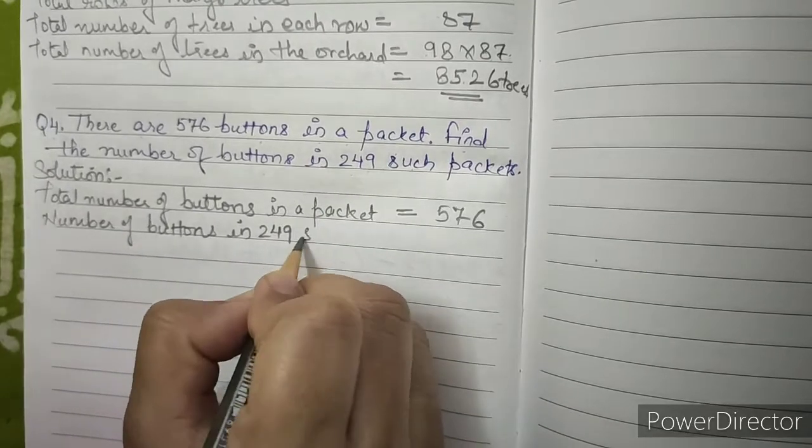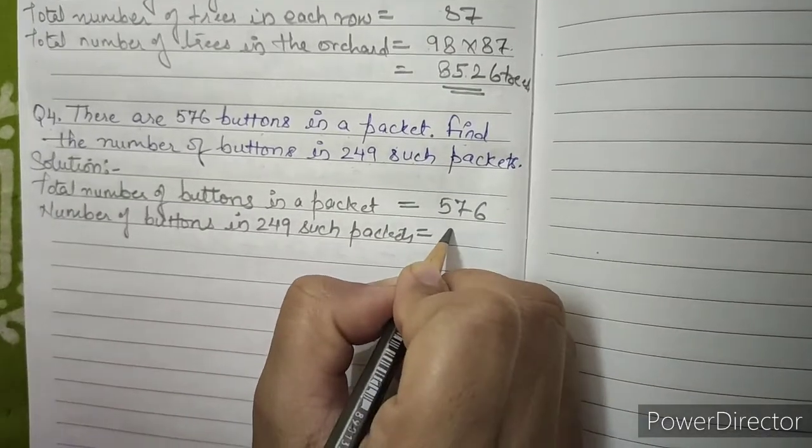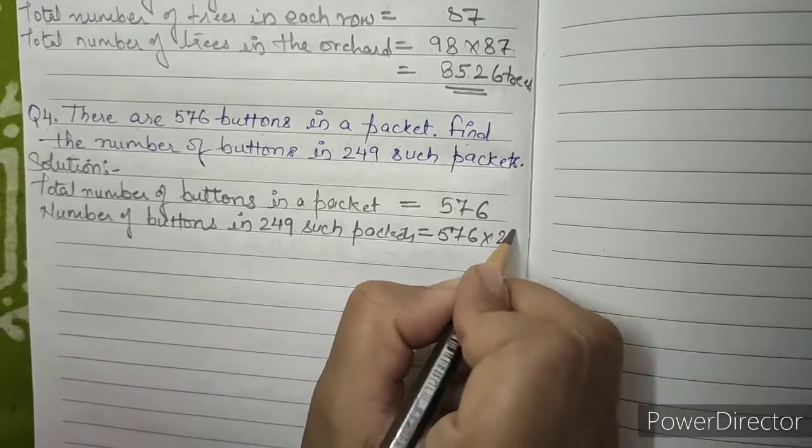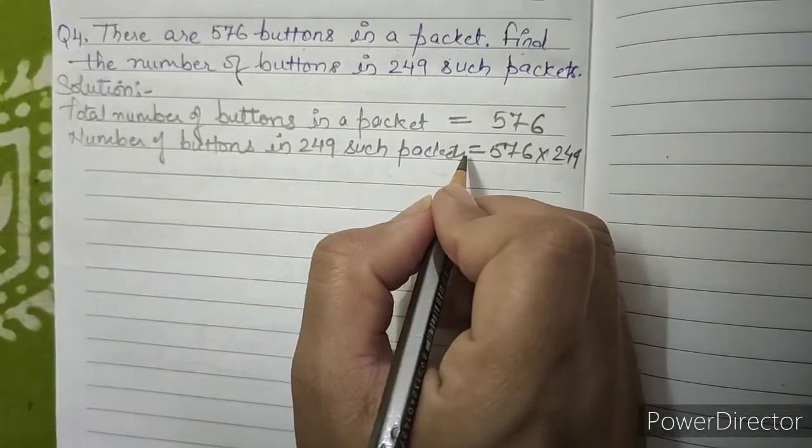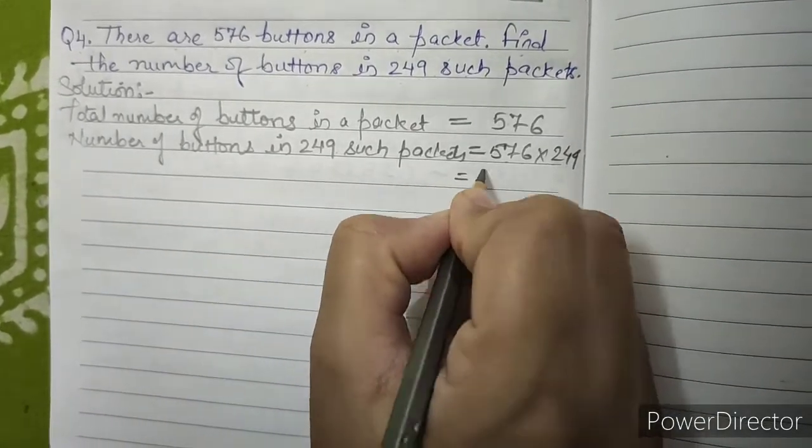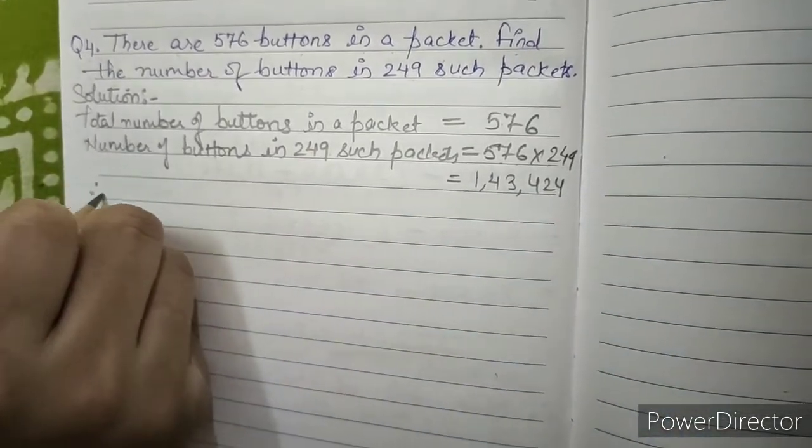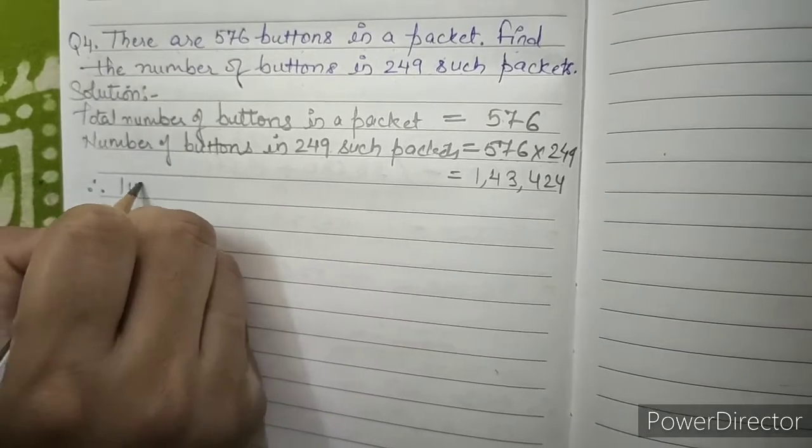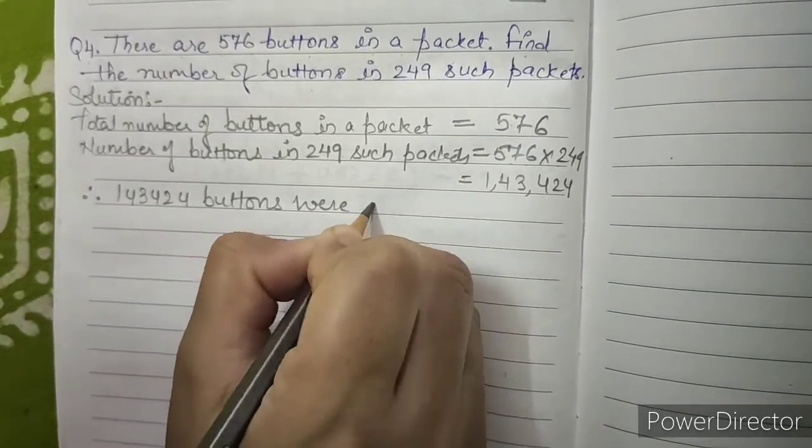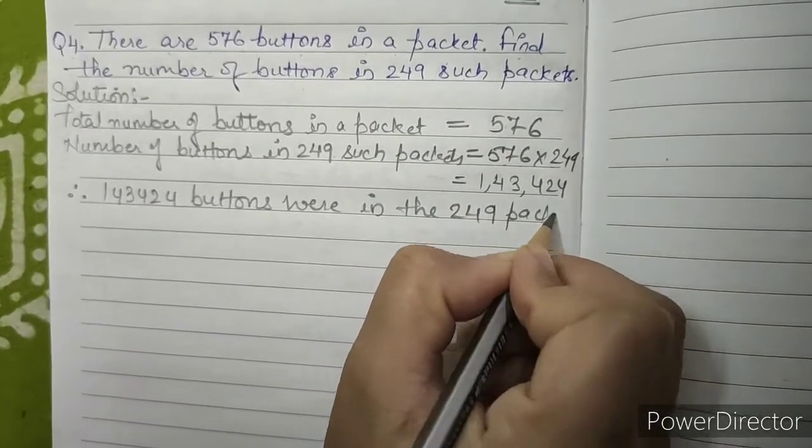After multiplying 576 and 249 we got our answer as 1,43,424. Therefore 1,43,424 buttons were in the 249 packets.